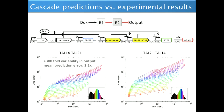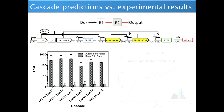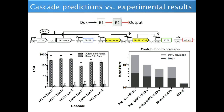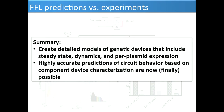In biology, when you're three to five fold off, everybody's pretty happy. But here within the subpopulations we get 20% off. The average was about 40% off for circuits that we built more complex cascades with. We were also able to do this not just for cascades but also for feed-forward loops, getting similar kinds of accuracies. We have detailed models of genetic devices that include steady-state dynamics and per-plasmid, per-DNA expression. Now we can do highly accurate predictions, at least for the kinds of circuits I've been mentioning.